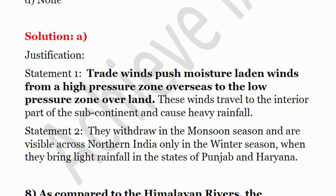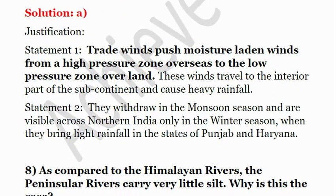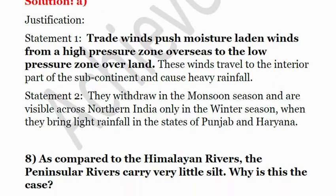Western disturbances are in fact responsible for rainfall in the winter season over Northwestern India — for example, in the states of Punjab, Haryana, Uttarakhand, Himachal Pradesh, and Kashmir areas, where we witness snowfall due to this.